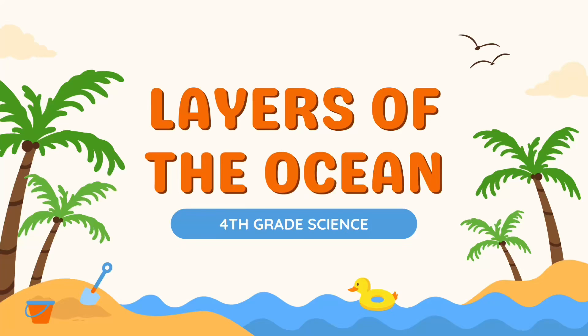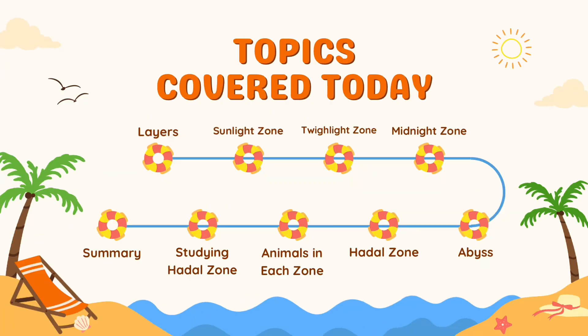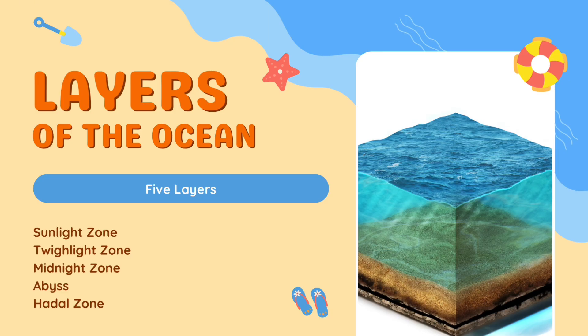Today it's time to review the layers of the ocean for fourth grade science. We're going to start by reviewing the layers, then we'll go over the sunlight zone, the twilight zone, the midnight zone, the abyss, and then finally the hadal zone. We'll talk about animals in each zone and how scientists study the hadal zone, then we'll review and finish with a summary.